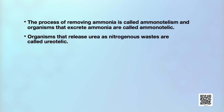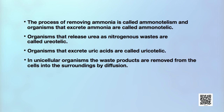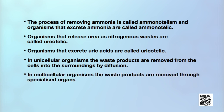The organisms that release urea as nitrogenous waste are called ureotelic, such as mammals and terrestrial amphibians. The organisms that excrete uric acid are called uricotelic. Examples include reptiles, birds and land snails. In unicellular organisms, the waste products are removed from the cells into the surroundings by diffusion. In multicellular organisms, the waste products are removed through specialized organs.